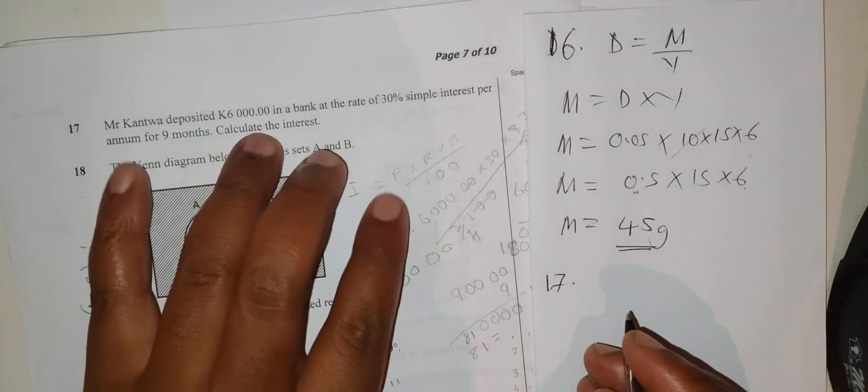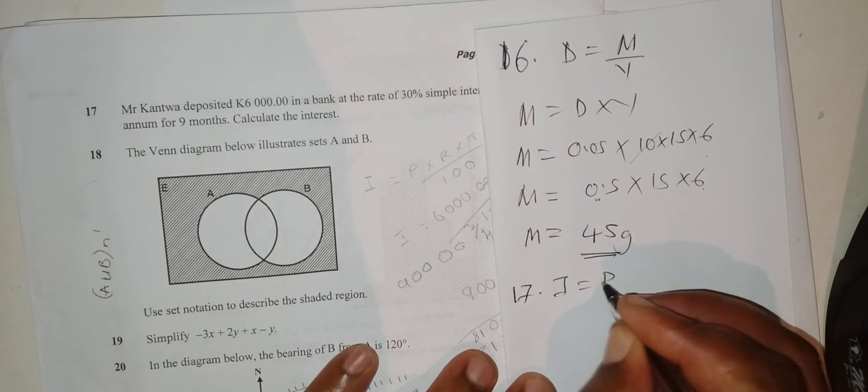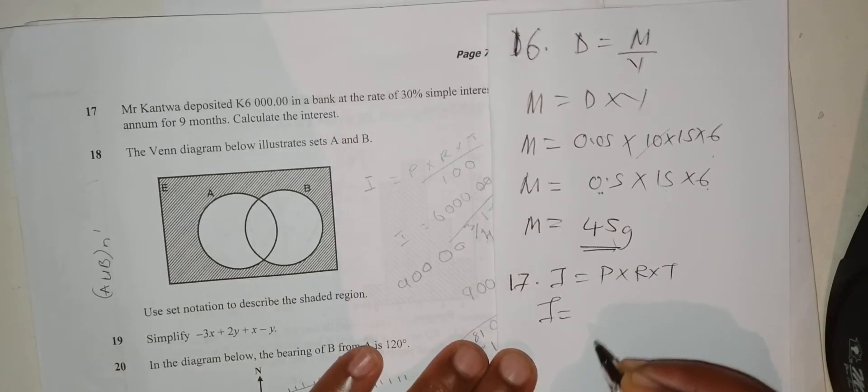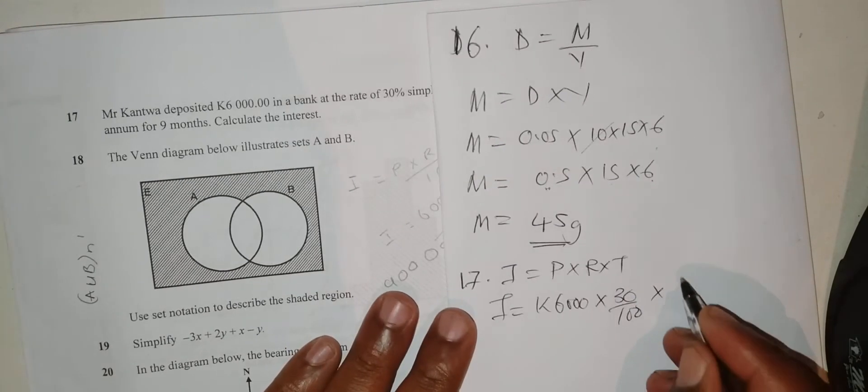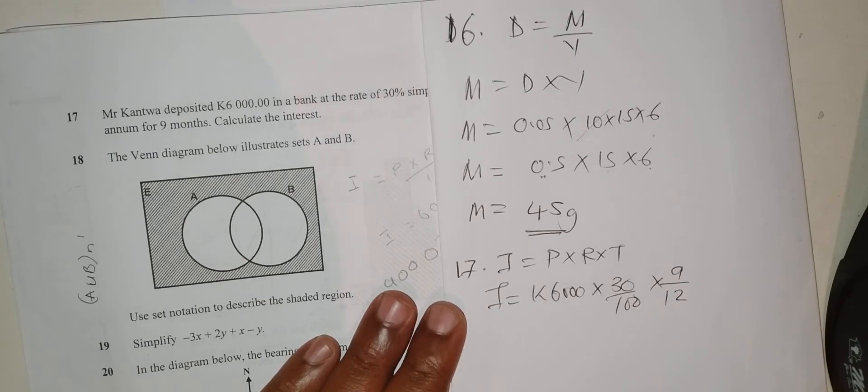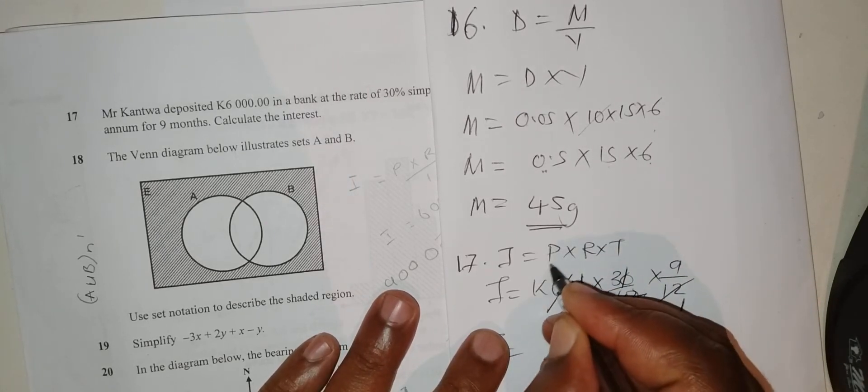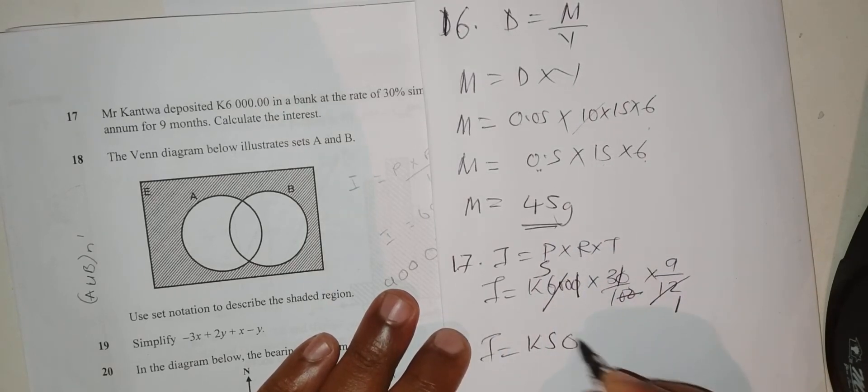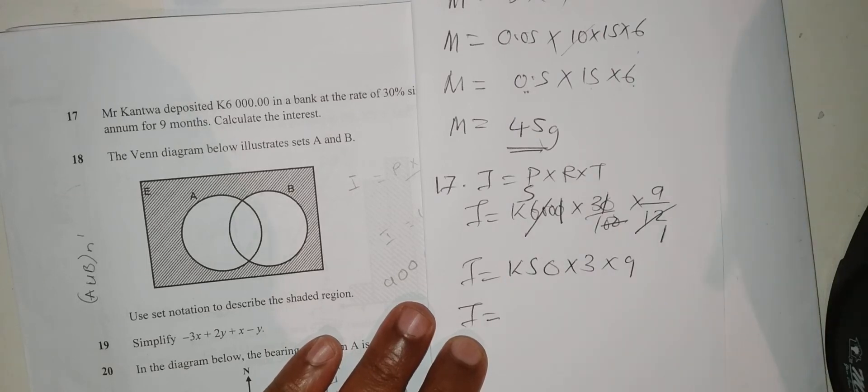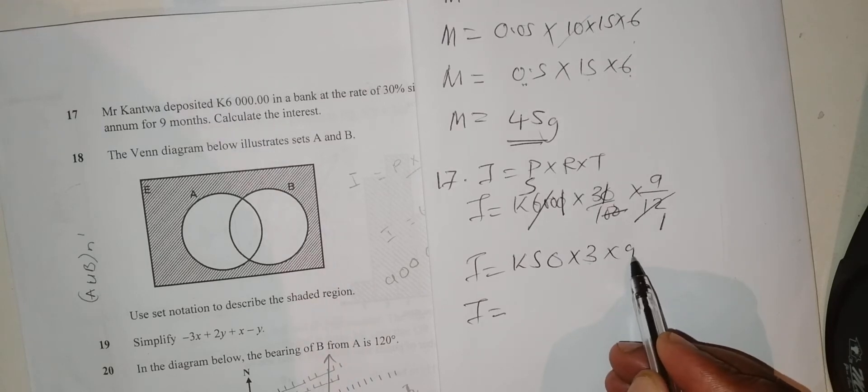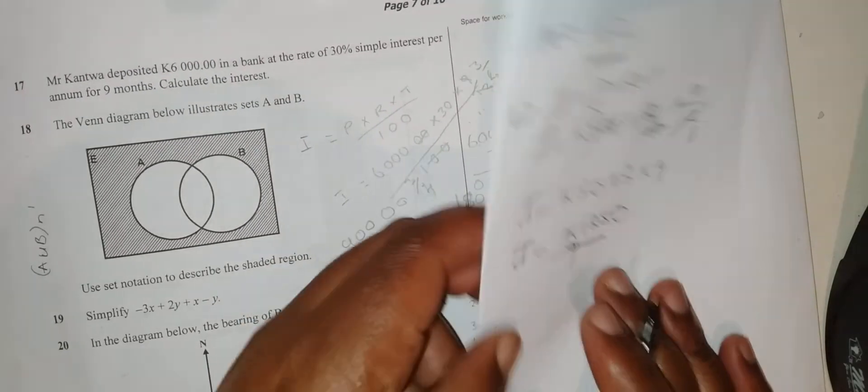Question 17: Mr. Pantor deposits 6,000 in a bank at the rate of 30% interest per annum for 9 months. Calculate the interest. Interest equals principal times rate times time. Interest equals 6,000 times 30% times 9 over 12. These zeros cancel, 12 into 60 is 5. So 5 by 3 by 9. 5 by 3 is 15, 15 by 9 is 135. But there's a zero here, so his interest is 1,350.